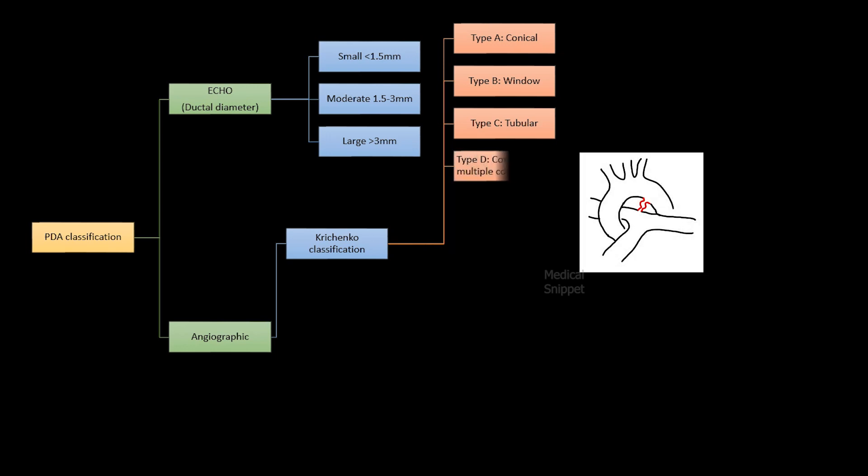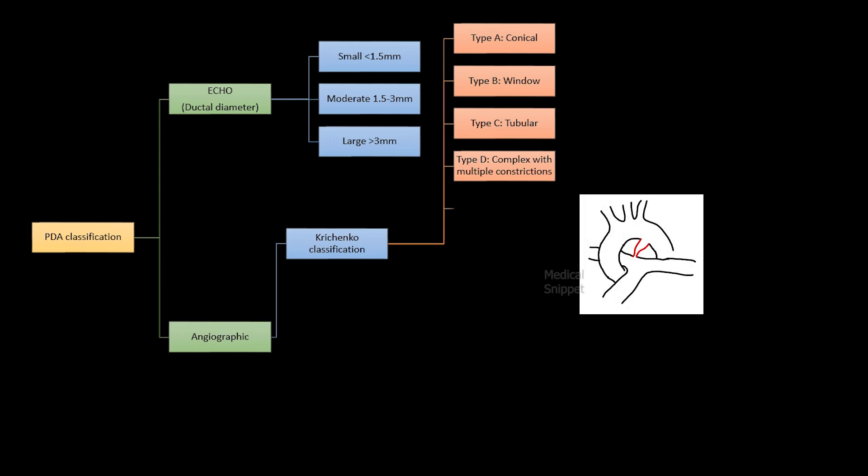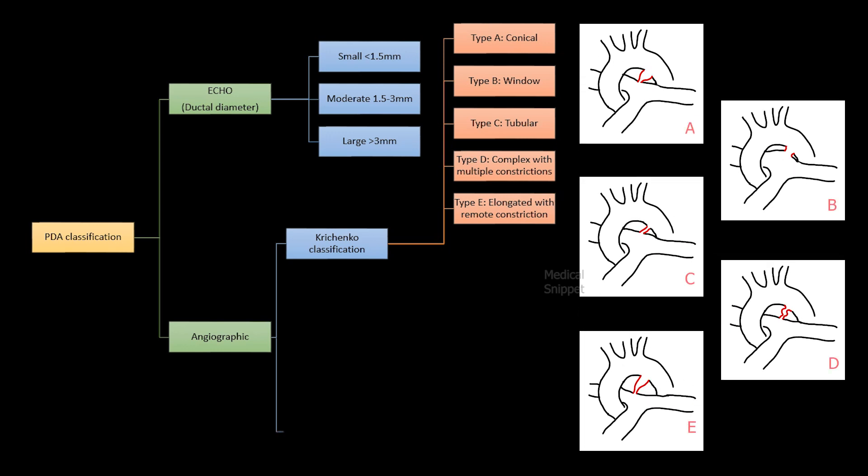Type D is a complex PDA with multiple constrictions. Type E is an elongated PDA with remote constriction. The second classification by angiography is according to size.